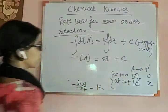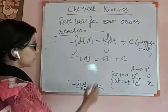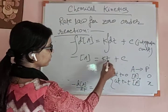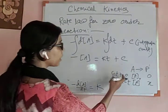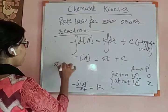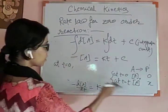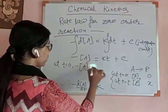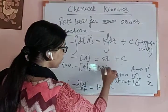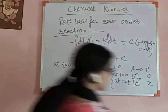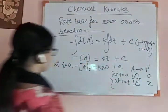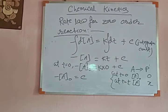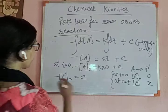Now apply the two conditions in this equation. Apply T equal to 0: at T equal to 0 the concentration of A is A₀. Apply T equal to 0 here: T equal to 0 plus C gives minus A₀ equal to C. We have obtained the value of C as minus A₀.